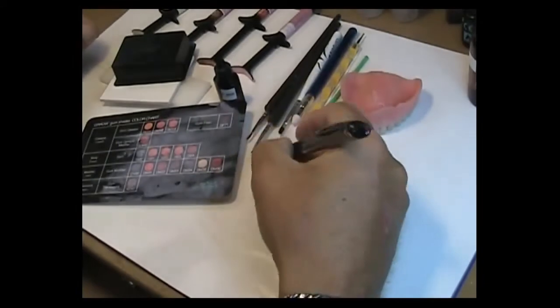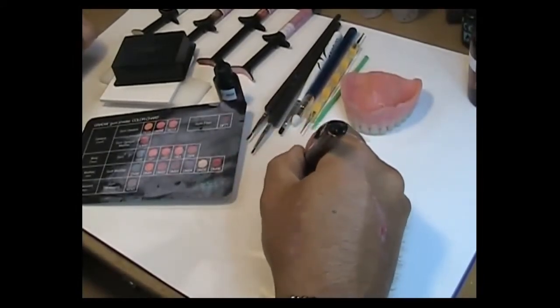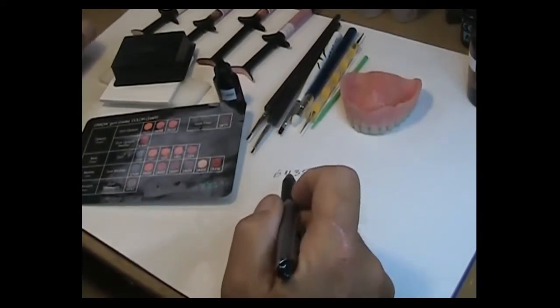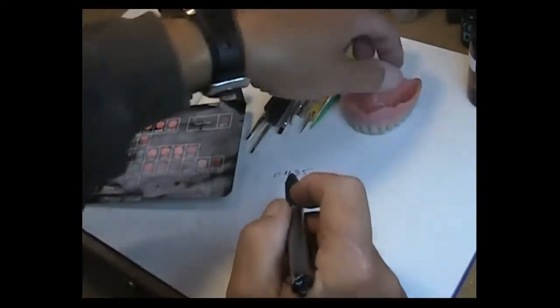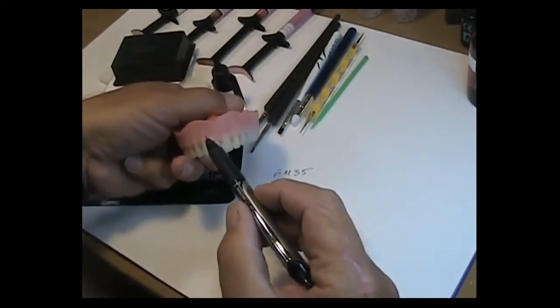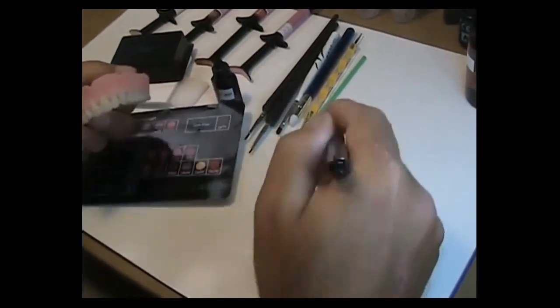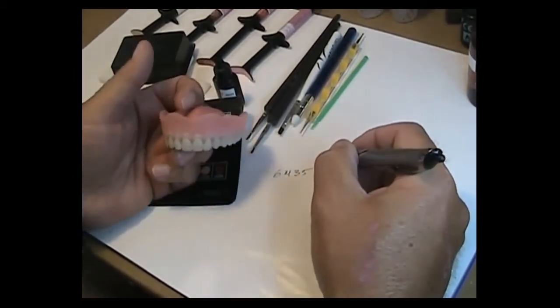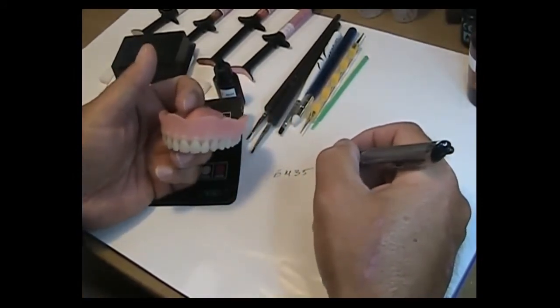For those who just want to jump in and give it a roll without getting too confused, let me recommend just a couple of these colors. The GM 35 is your blanche effect that you get in your denture base along the necks. It's a light color, it's intense.